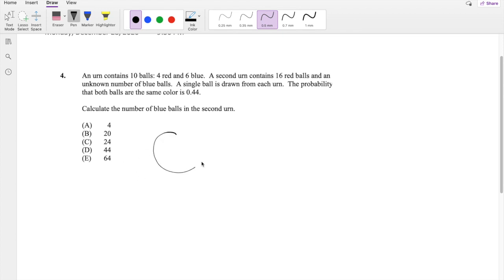So there's two urns, right? On the first urn, there is 4 red balls. In the second one, there is 16 red balls. In the first one, there's also 6 blue balls. In the second one, we have an unknown amount of blue balls.